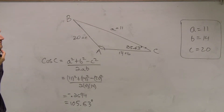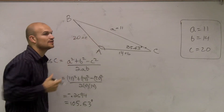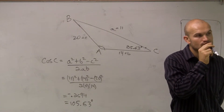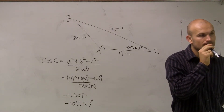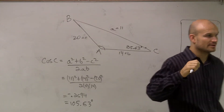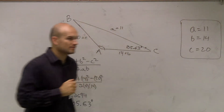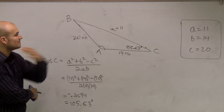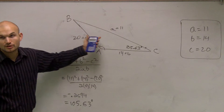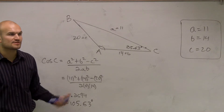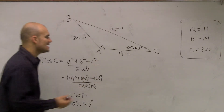So now we have 105.63 degrees for angle C. Now we need to determine our other angles, A and B. We could do the law of cosines again for A and then for B, but that's a lot of work. So the next thing we want to do is just use the law of sines.